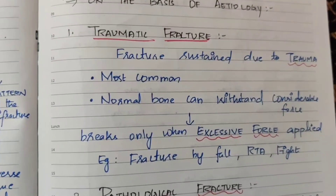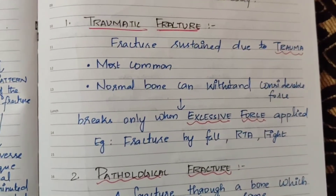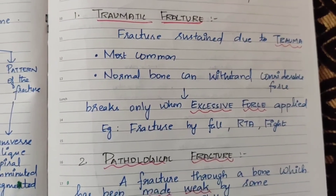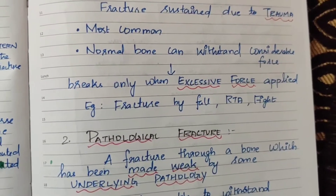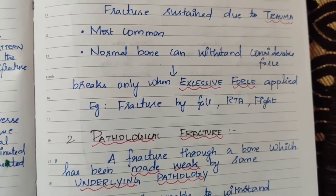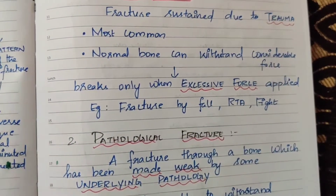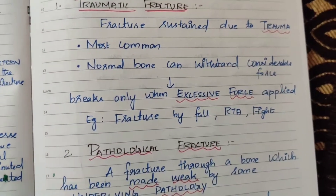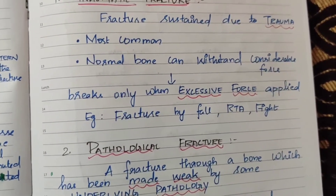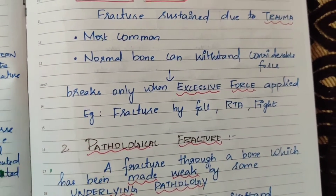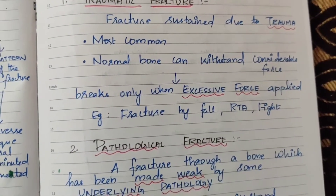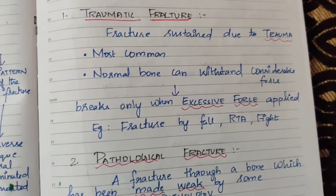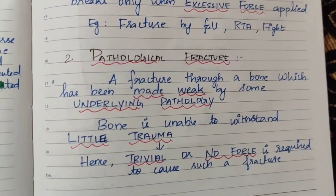First category: traumatic and pathological. Traumatic fracture occurs due to trauma — injury and force. When you apply injury or force to the bone, it results in a traumatic fracture.